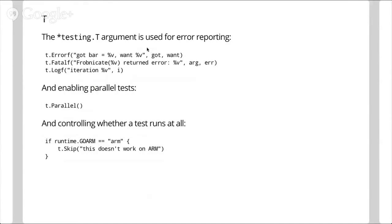The testing.T argument is used for reporting errors, but it can also be used — if you call t.Fatal — to bail out of a test midway through if it has failed unrecoverably. You can use the log function to print log messages when you run go test with the -v flag. You can also call t.Parallel near the top of your test function to mark it as safe for parallel execution, so the testing framework will parallelize those tests across however many cores you have.